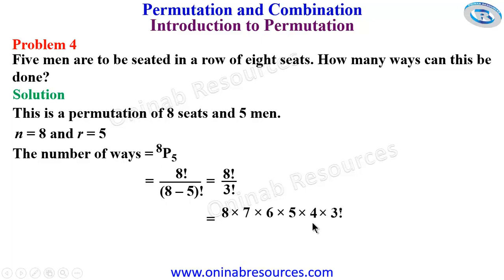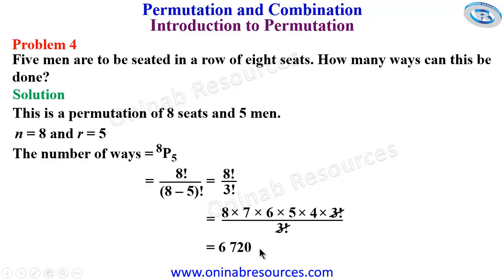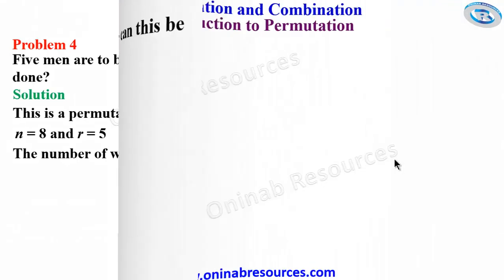Expanding: 8! / 3! = (8 × 7 × 6 × 5 × 4 × 3!) / 3!. The 3! cancels, leaving 8 × 7 × 6 × 5 × 4 = 6,720 ways of arranging the 5 men in a row of 8 seats. That's all for problem four.